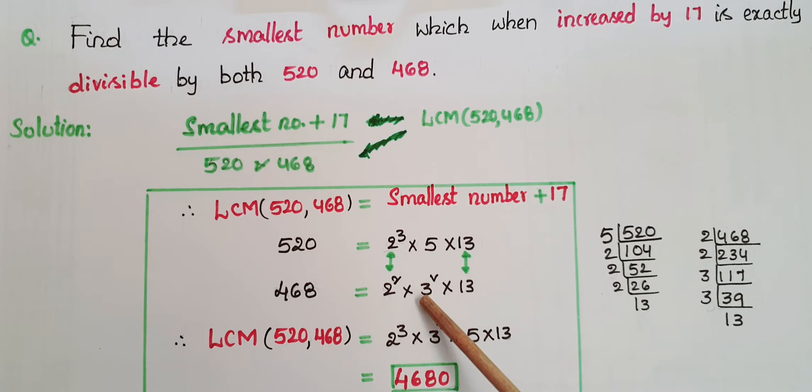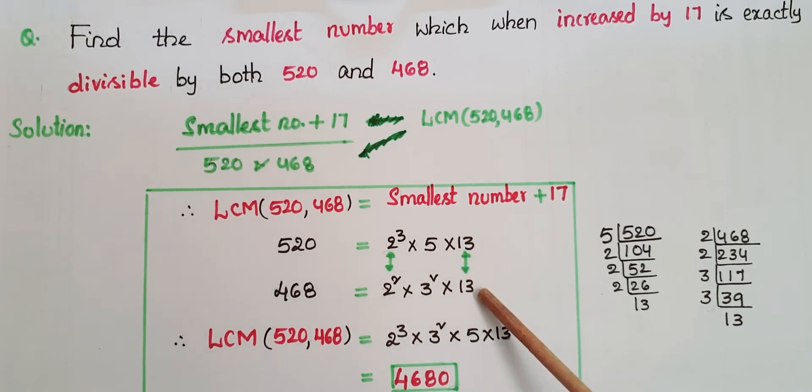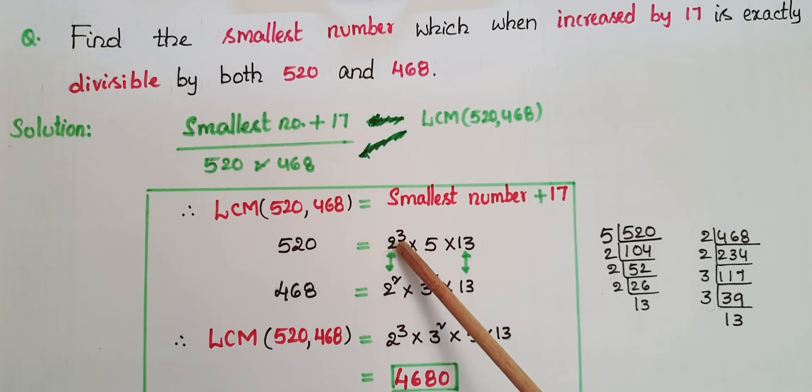So you have to see the common factors first. So here 2 is the common factor and 13 is also a common factor. So the highest power here is 3, so 2³.